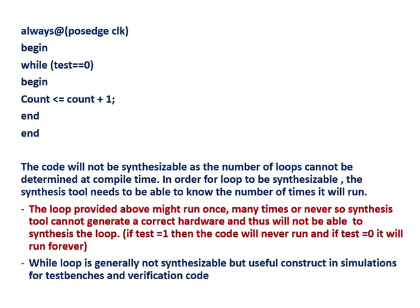This code is not synthesizable. Why is this code not synthesizable? Because during compile time, it is not known for how many times the loop is going to run. If this condition won't satisfy — suppose if test is not equal to zero — then how many times this loop is going to run during compile time is not determined. That's why the synthesis tool won't be able to generate proper hardware for this code. That is the reason why this code is not synthesizable.